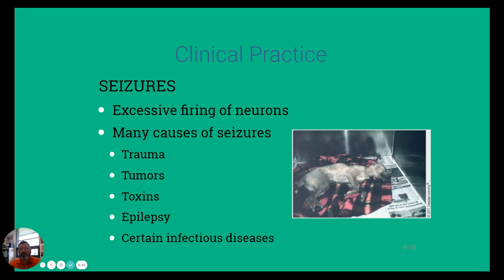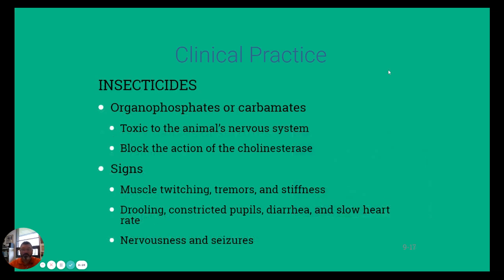Seizures occur when the nervous system begins to misfire or there is excessive firing of neurons. Trauma, tumors, toxins, and certain infectious diseases can set off seizures. Insecticides, in poisoning incidents, can block cholinesterases which help trigger neurons to fire. You may see muscle twitching, tenseness or stiffness, drooling, and seizures. This is a reminder that insecticides can have nervous system effects if an animal is exposed — be careful with how you store and use them.